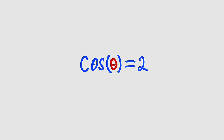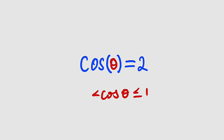Hello good viewers. In this tutorial, we are going to find a solution to this interesting trigonometric equation. We want to find the angle theta that satisfies the equation cosine theta equal to 2. But that's a big problem because we know that cosine of any angle is between negative 1 and 1 — it can never go beyond that. But this is 2, which means this equation has no solution in the set of real numbers.